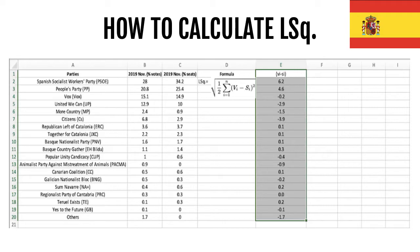This is clearly seen here. When we look at the difference between 34.2 minus 28 is 6.2, 25.4 minus 20.8 is 4.6, and so on for every single party or coalition.